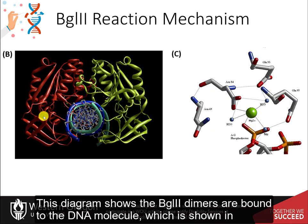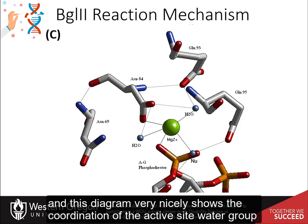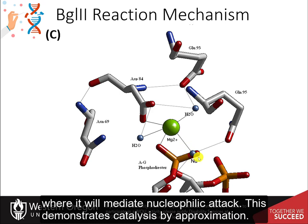This diagram shows the BglII dimer bound to the DNA molecule, which is shown in cross-section here in the green and the blue. The strain distortion can be seen out here. And this diagram very nicely shows the coordination of the active site water group by the magnesium in the enzyme core, positioning it right next to the phosphate group, where it will mediate nucleophilic attack. This demonstrates catalysis by approximation.